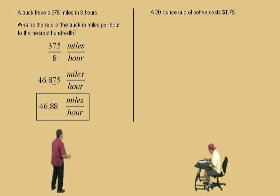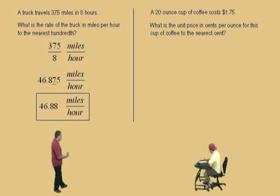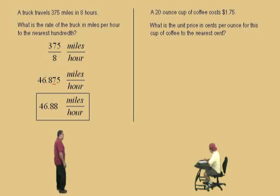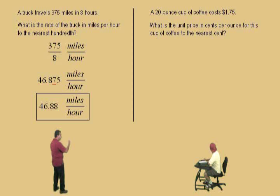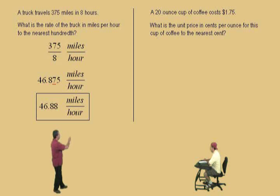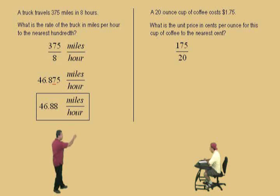Now we're going to go to unit price. Let's talk about this unit price problem. It says a 20-ounce cup of coffee costs $1.75. What is the unit price in cents per ounce for this cup of coffee to the nearest cent? Be careful — you've got to read these questions carefully. So we're looking for the ratio of cents per ounce. But look at the information we're given: it costs $1.75 for 20 ounces. Now remember, we want cents per ounce, so we're not going to put 1.75.